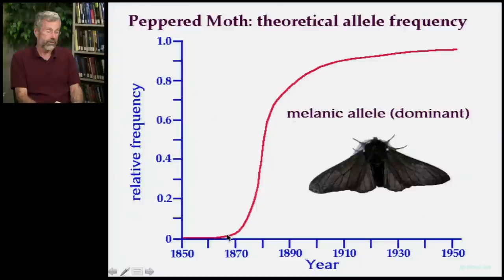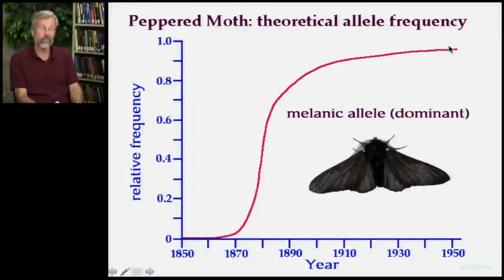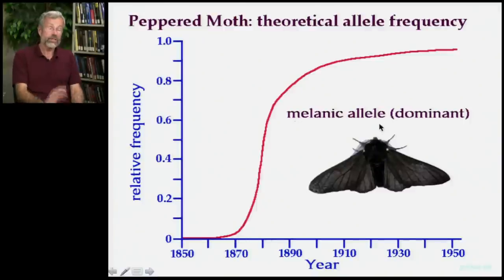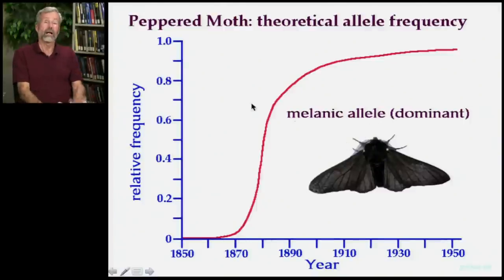And so the relative frequency of the allele that controlled for the coloration of this insect increased and went almost to fixation by the 1950s. This is theoretical, as best as can be reconstructed.